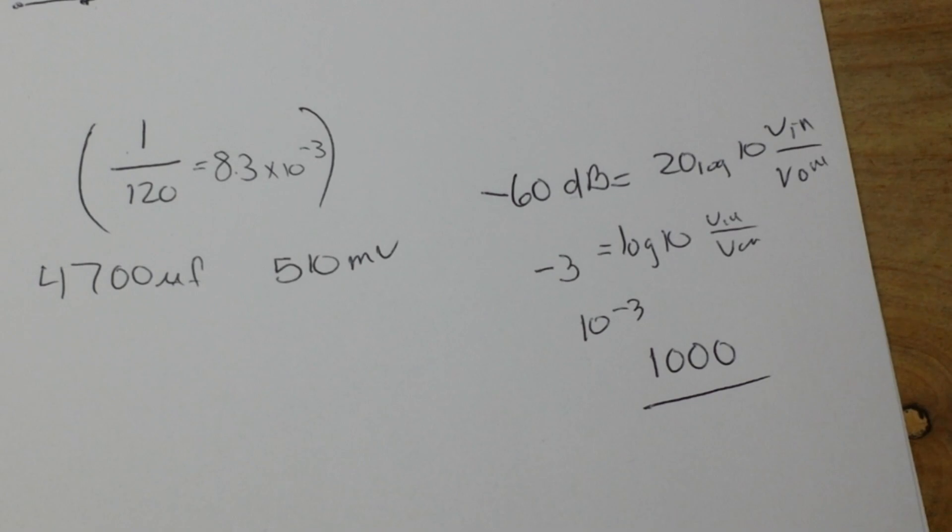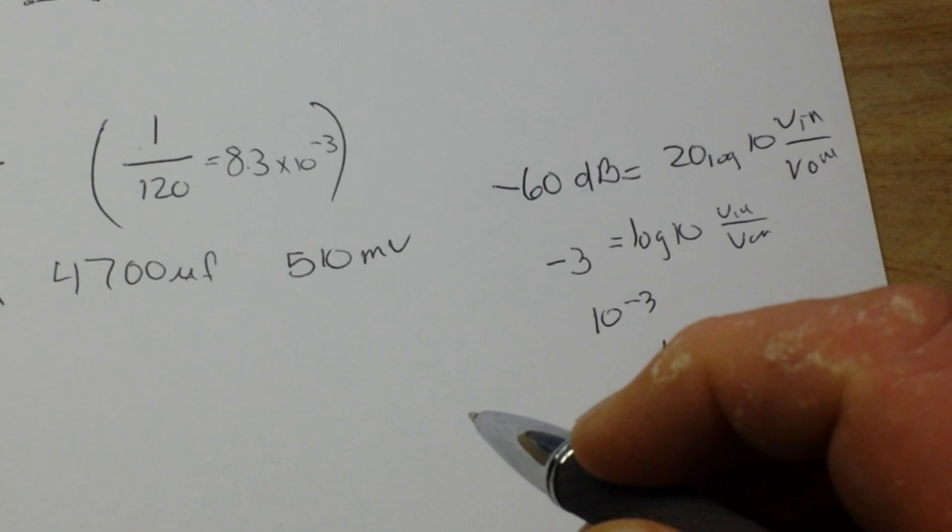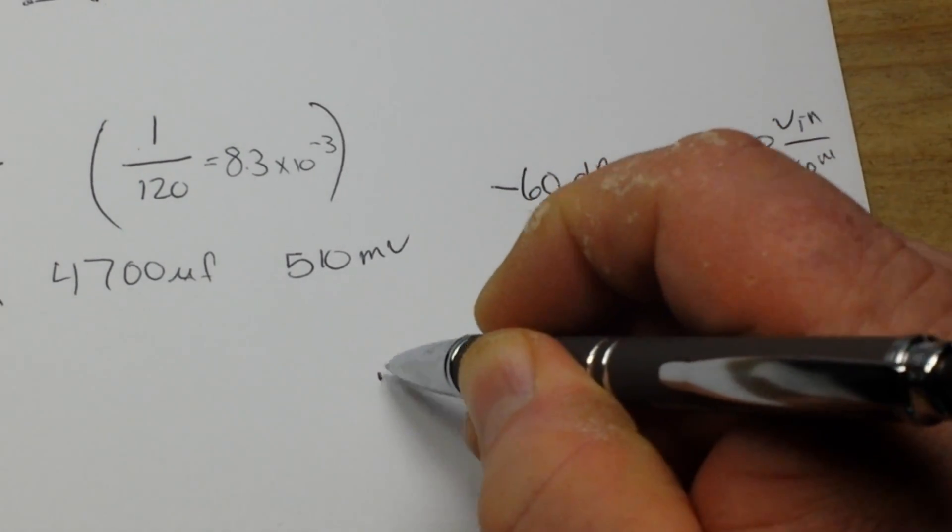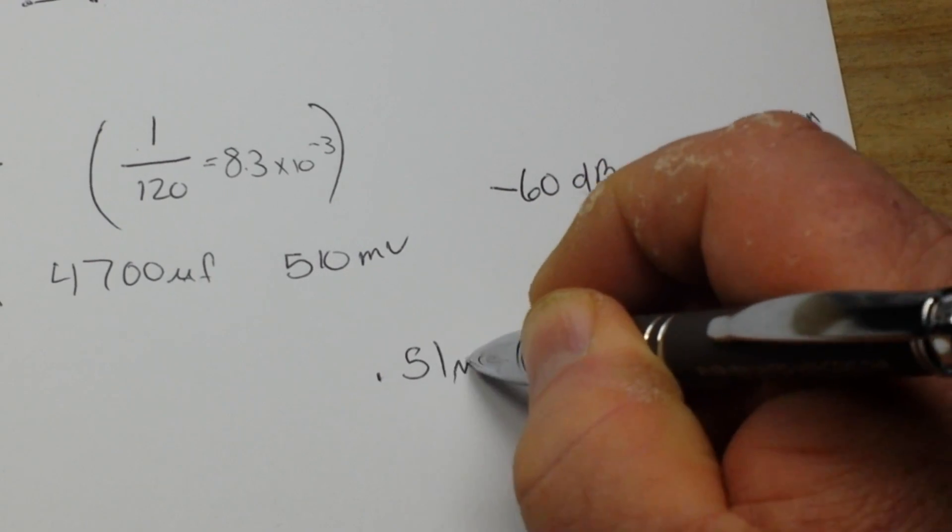Now your factor of 1000, if you plug that in, 510 is going to end up giving us 0.51 millivolts.